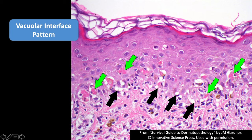The main point is pink blobs of dead keratinocyte along the basal layer and white little bubbles or vacuoles. People call that vacuolar change or liquefactive degeneration — little vacuoles forming as the lymphocytes are damaging and destroying the basal keratinocytes.